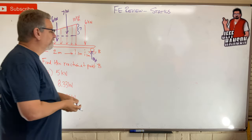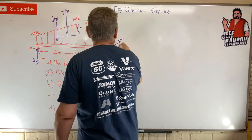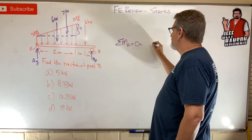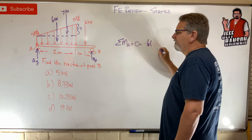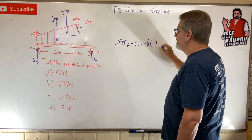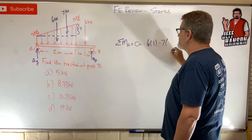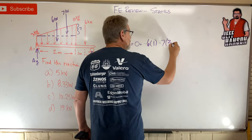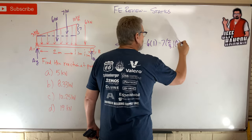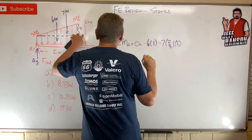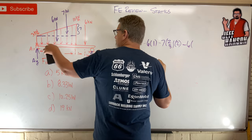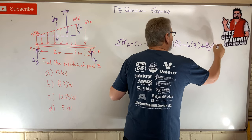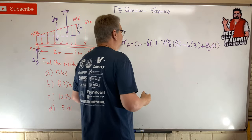Sum of moments at A: I've got 6 kN — it rotates negative — times 1 (the middle of the 2-meter span). Then minus 7 kN times two-thirds of 2. Then minus 6 times 2 — wait, minus 6 times the distance of that point load. And then plus By times 4.